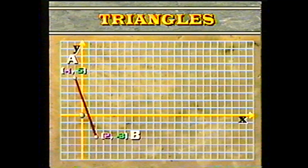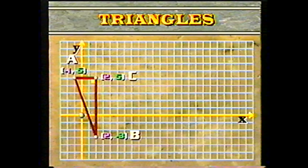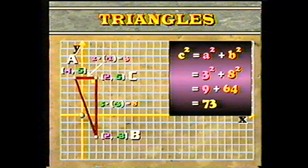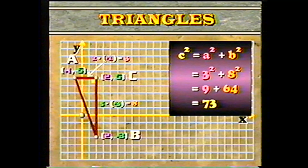Let's do another problem where the arithmetic is a little bit harder. What is the distance between the points A and B, whose coordinates are (-1, 5) and (2, -3)? Draw point C at (2, 5) to form a right triangle. To find the length of AC, subtract the x-coordinates: 2 minus (-1), so the length of AC is 3. The length of BC is the difference of the y-coordinates: 5 minus (-3), so the length of BC is 8. C squared equals A squared plus B squared, which equals 3 squared plus 8 squared, or 9 plus 64, which equals 73.